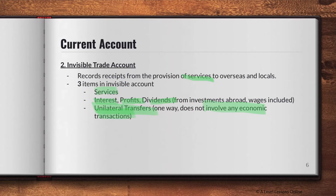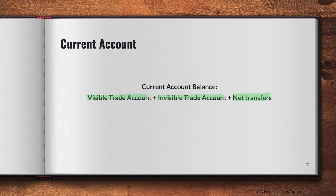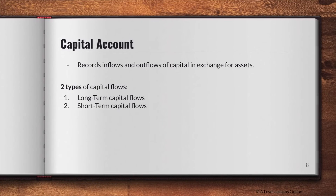So the current account is made up of the visible trade account and the invisible trade account. The formula is: visible trade account plus invisible trade account plus any net transfers. Net transfers cover any money transfers between economies that don't fall neatly into either the visible or invisible trade account. All of this together makes up the current account balance.